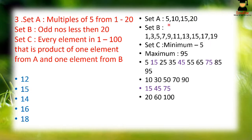For 5 in Set A, the maximum product within range is 5 × 19 = 95, giving 10 valid numbers from Set B. For 10, the maximum is 90, giving 5 valid numbers. For 15, the maximum product in range is 90 (15 × 6), giving 3 valid numbers: 1, 3, 5. For 20, the maximum is 20 × 5 = 100, giving 3 valid numbers: 1, 3, 5. That totals 10 + 5 + 3 + 3 = 21 numbers.